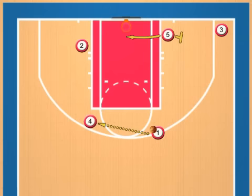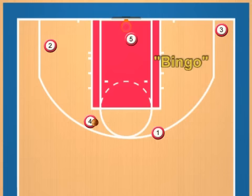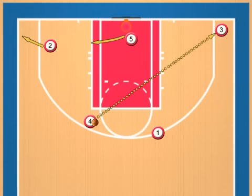As this action occurs, number five sets a screen for number three, but the defender on number three cheats into the middle, anticipating the play coming his direction. Seeing his defender out of place, number three shouts a code word to number four — "bingo," for example — and stays in place. This alerts number four that his teammate is open.